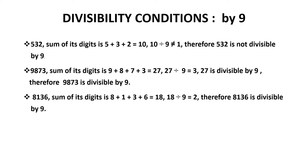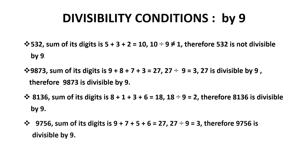The number 8136 — what is the sum of its digits? 18. 18 can be divided by 9, and the number 8136 is divisible by 9. The number 9756: the sum of the digits is 27. 27 is divisible by 9, therefore 9756 is divisible by 9.